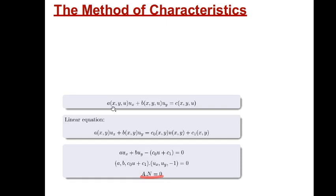First, consider a quasi-linear equation of the form A(x, y, u) u_x plus B(x, y, u) u_y equal to C(x, y, u). We need to solve this quasi-linear equation. The solution of a partial differential equation consists of integral surfaces, and in fact there are infinitely many surfaces. Our aim is to find a smooth function u which satisfies this equation in some domain — an open subset of R2, since u is a function of x and y.